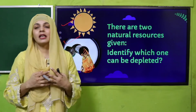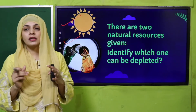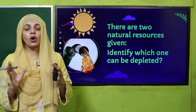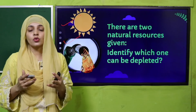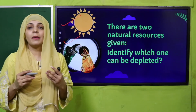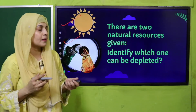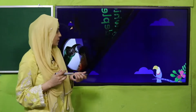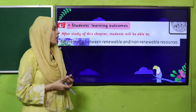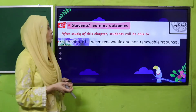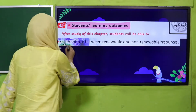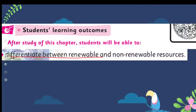It is petrol. When petrol is used, you cannot regenerate it — aap usko dobarah istamal nahi kar sakte. So in today's lecture, students will be able to differentiate between renewable and non-renewable resources.